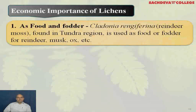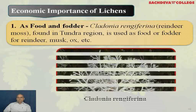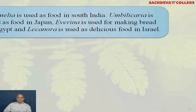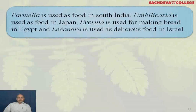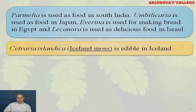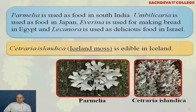Economic importance of lichens. As a food or fodder: Cladonia rangiferina, commonly called reindeer moss, is found in the Tundra region and is used as food or fodder for reindeer, musk ox, etc. Parmelia is used as food in South India. Umbilicaria is used as food in Japan. Evernia is used for making bread in Egypt. Lecanora is used as a delicacy in Israel. Cetraria islandica, commonly called Iceland moss, is eaten in Iceland.